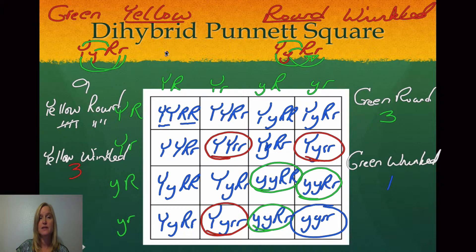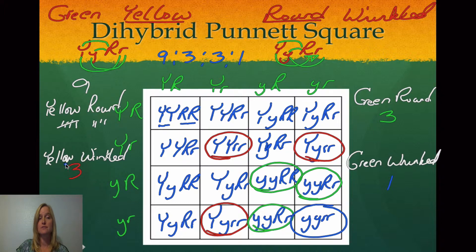This is a typical ratio that we find with a dihybrid Punnett square when we cross heterozygous with heterozygous. What you're going to come up with is a 9 to 3 to 3 to 1 ratio: nine where both traits are dominant, three where the first trait is dominant and the second is recessive, three where the first trait is recessive and the second is dominant, and one where both traits are recessive.